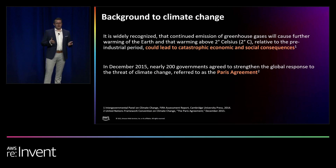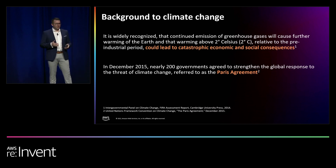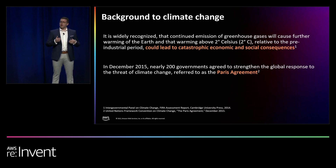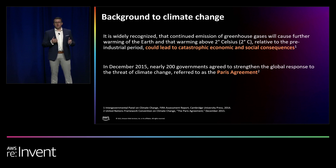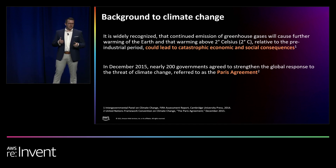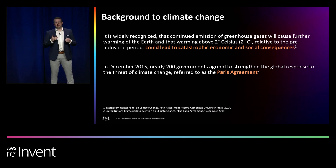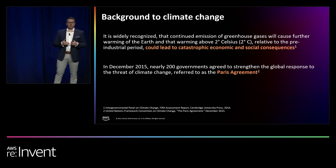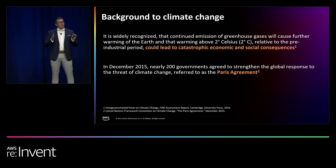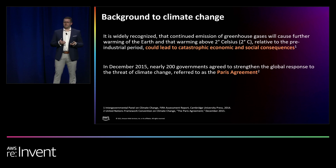It is widely recognized that continued emissions of greenhouse gases will cause further warming of the earth, and that warming above 2 degrees Celsius compared to pre-industrial levels could lead to catastrophic economic and social consequences. In response, nearly 200 governments agreed in December 2015 to strengthen the global response to the climate threat by limiting temperature increase to well below 2 degrees Celsius, targeting 1.5 degrees Celsius — referred to as the Paris Agreement.